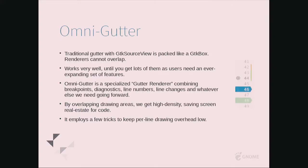Those who have used the debugger are probably familiar with this. We have line changes from Git, debugger breakpoints, and errors coming from the diagnostics engine. Traditionally with GTK Source View, each of those is like a column and you pack them in like a GTK box. That becomes complicated when you keep adding features because it keeps getting wider and wider, and the more space you take for that, the less space you have for code. So we came up with a clever trick to combine everything into one renderer and get that density down.